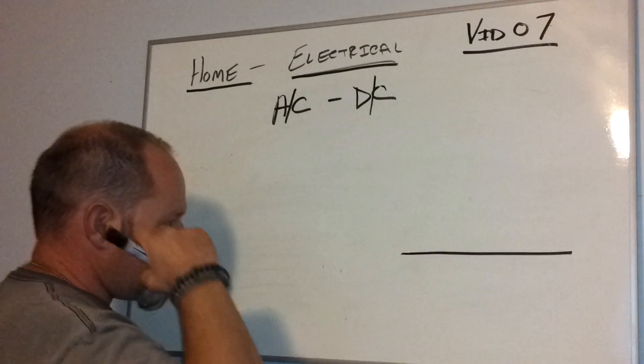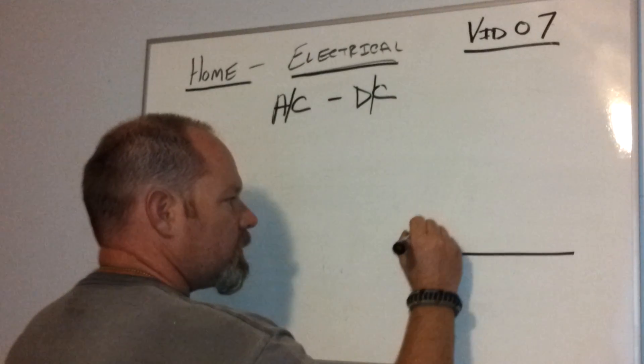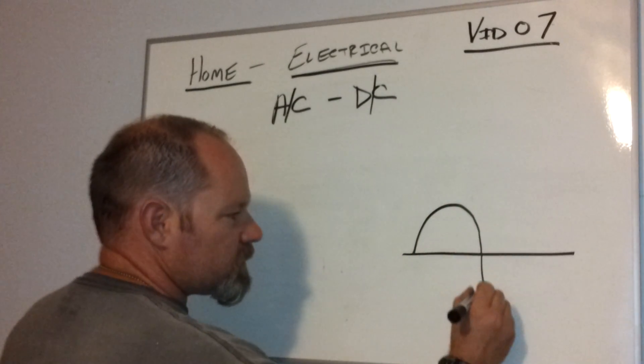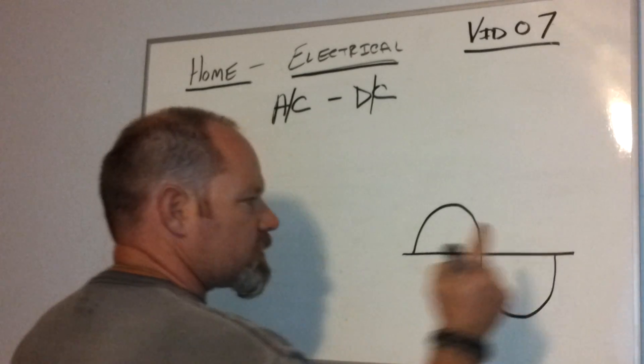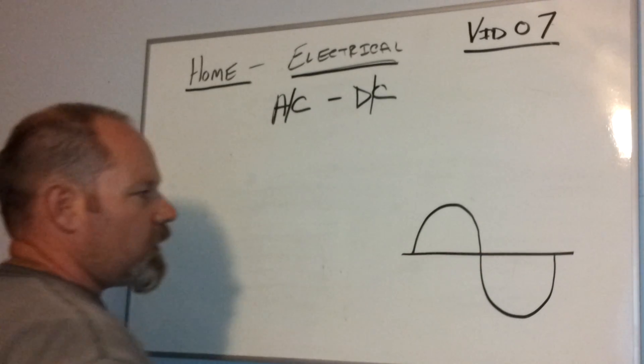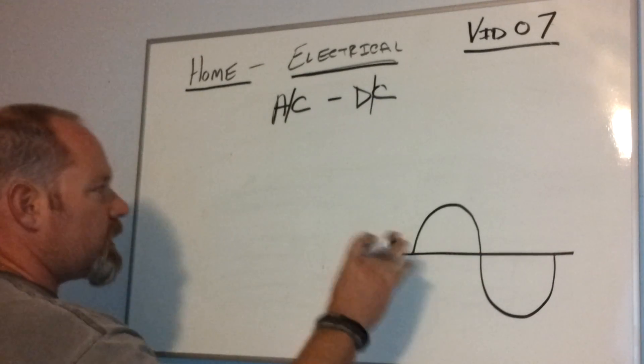Now this can be seen in a wave pattern like this. Electrons flow one direction, they stop, they turn around, they go the other direction. This is called a sine wave. We'll get into other sine waves later, but that's a sine wave.